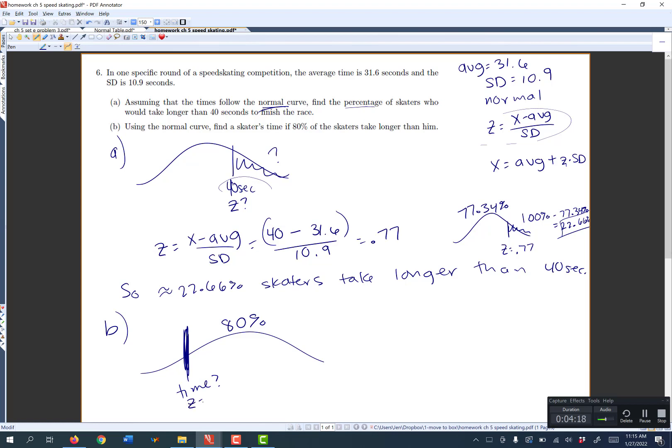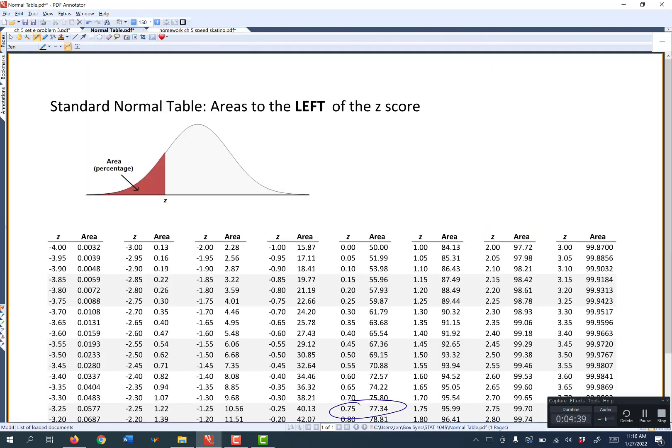The first step to do that is always to find your z value. So the z value is your intermediate step between percentages and your actual x values, your actual times. But I can't use a normal table for area to the right. So I'll think, what is 100% minus 80%? That should give me 20% to the left.